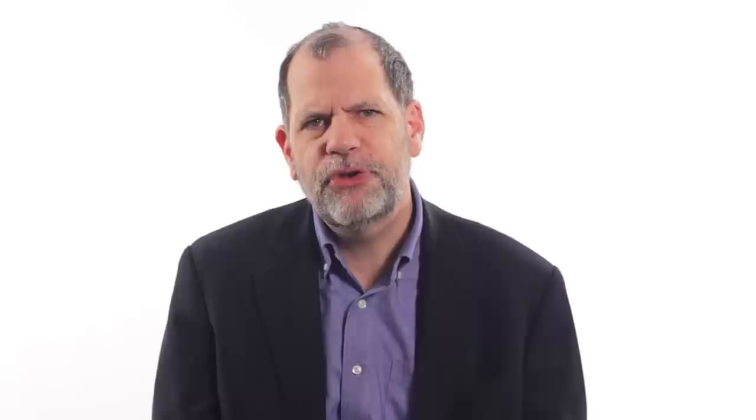Think about the demanders of labor — businesses. What substitutes for labor do they have? If the price of labor goes up, what can those businesses do? What about the supply of labor — the workers? If their wage goes down, what can they do? For most workers, especially full-time workers, they don't really have a lot of good substitutes for work. Most workers need some kind of job — even if their wage goes down, they're going to continue to work because they need to pay the bills. On the other hand, the demanders of labor, if the wage were to go up, could substitute capital for labor or move investments to other countries. They have quite a few good substitutes. So we should probably draw the diagram with a fairly inelastic supply of labor and a fairly elastic demand for labor.